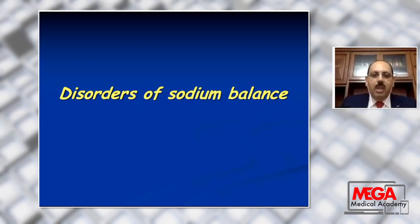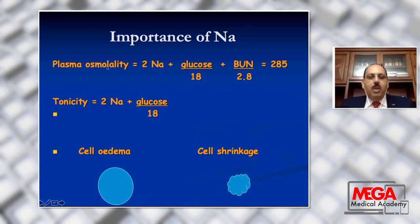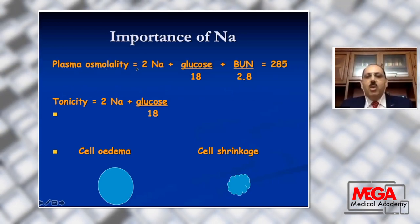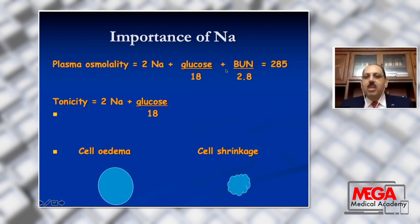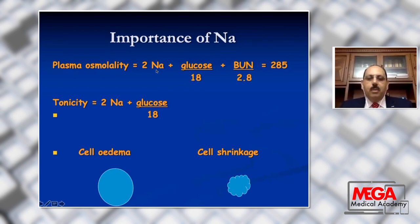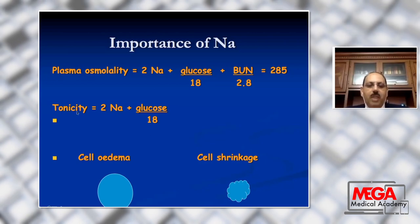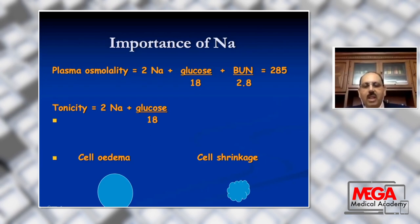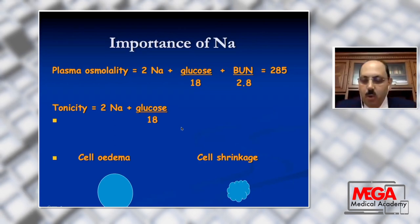Starting with sodium, its importance is as the main component of the equation in measurement of plasma osmolality. Plasma osmolality equals 2 multiplied by sodium plus glucose over 18, plus blood urea nitrogen over 2.8. So any changes in sodium, either increased or decreased, will affect the plasma osmolality. Also, sodium will affect blood tonicity, so the net movement of water into or outside the cell is controlled by sodium, resulting in either cell shrinkage or cellular edema.